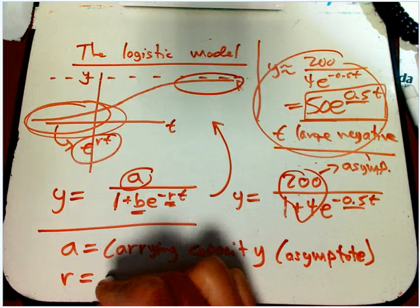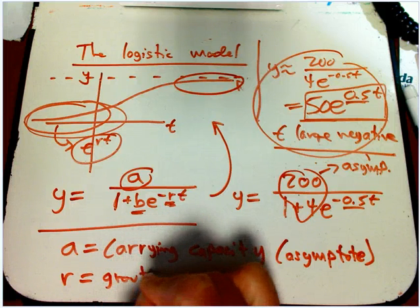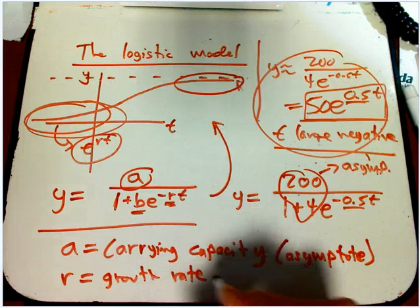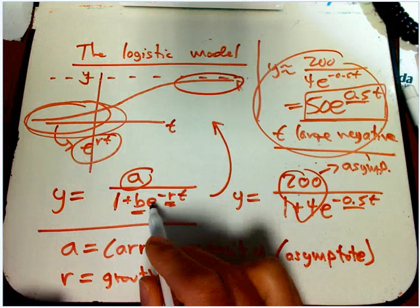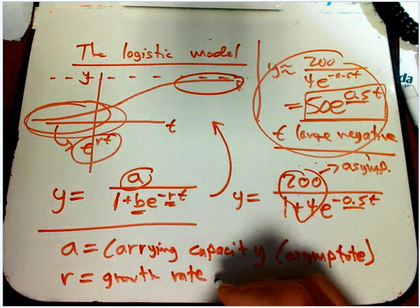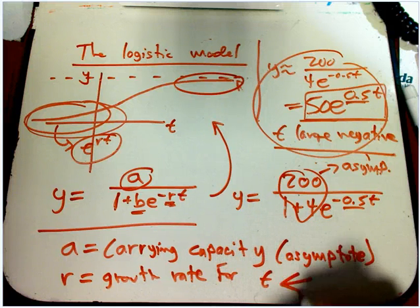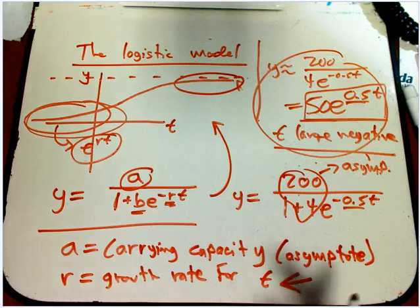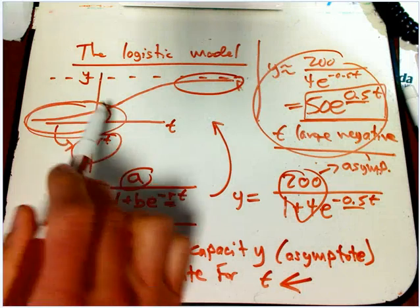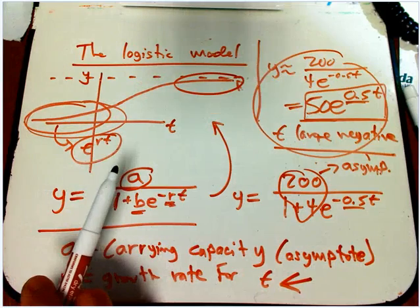That the far left is just exponential growth. And so, that means r is the growth rate. It's the ordinary exponential growth rate with the base e here for t way to the left, very large negative. Anyway, well, you're still in the growth phase, before it starts to taper off.